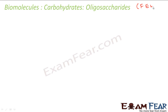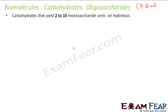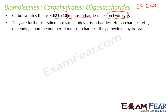The word 'oligo' means few. Oligosaccharides on hydrolysis give 2 to 10 units of monosaccharides. If a carbohydrate on hydrolysis gives 2 to 10 units of monosaccharides, it is an oligosaccharide. Oligosaccharides are further classified as disaccharides, trisaccharides, tetrasaccharides, and so on. Disaccharides are the most important category because many disaccharides are important in our daily life. The classification is based on the number of monosaccharides obtained.